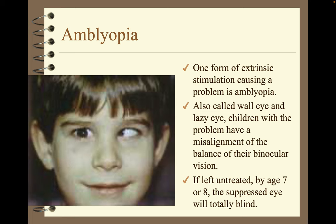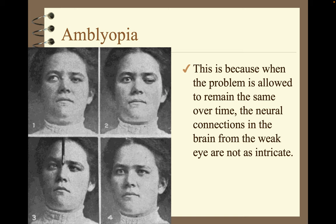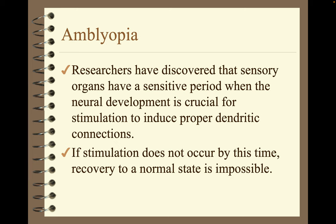One form of extrinsic stimulation causing a problem is amblyopia, also called walleye and lazy eye. Children with the problem have a misalignment of the balance of their binocular vision. If left untreated by age seven or eight, the suppressed eye will go totally blind. While treatment in childhood will result in perfect vision, when the problem is corrected in adulthood the eye does not gain acute vision. This is because when the problem is allowed to remain, the neural connections in the brain from the weak eye are not as intricate. Understanding of amblyopia has been studied through binocular deprivation research on laboratory animals. Researchers have discovered that sensory organs have a sensitive period when neural development is crucial — if stimulation doesn't occur by this time, recovery to a normal state is impossible.